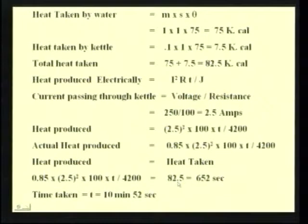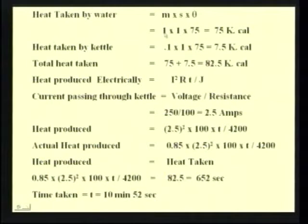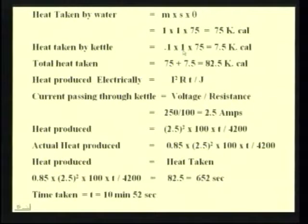Now let us solve the problem. Heat taken by water equals M into S into theta, where M is the mass, S is the specific gravity, and theta is the rise in temperature. Water is heated from 15 degrees to 90 degrees. Mass of water is 1 kg, specific gravity of water is 1, and rise in temperature is 75. This comes out to be 75 kilocalories. Heat taken by the kettle: mass is 0.1 kg, specific heat of vessel is 1, and rise in temperature is 75, giving 7.5 kilocalories. Total heat taken by kettle and water is 75 plus 7.5, which equals 82.5 kilocalories.